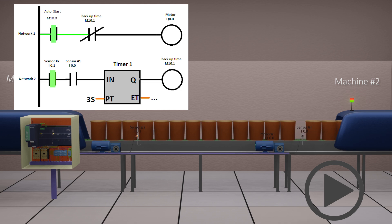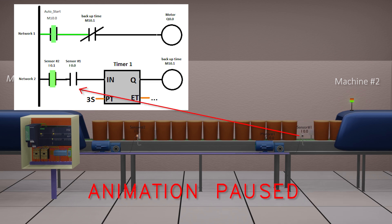As the machine starts again, its inlet conveyor starts and it will remove the buckets in front of sensor 1. This will disable timer 1 in network 2.